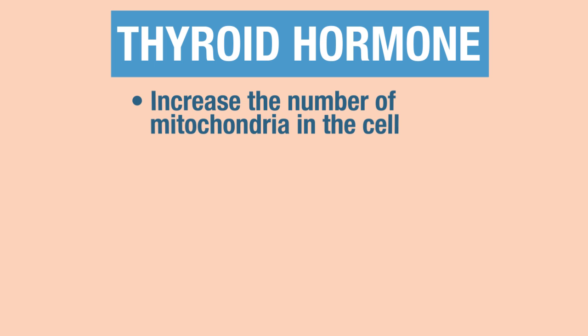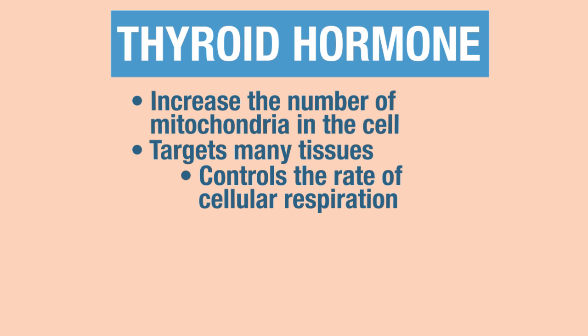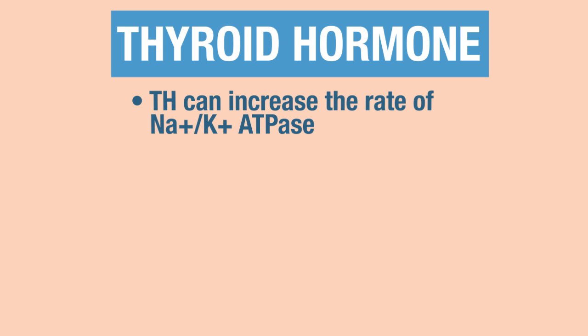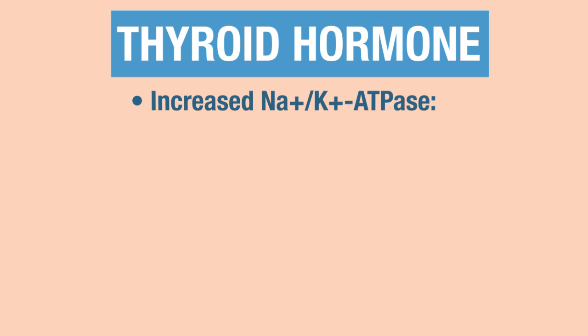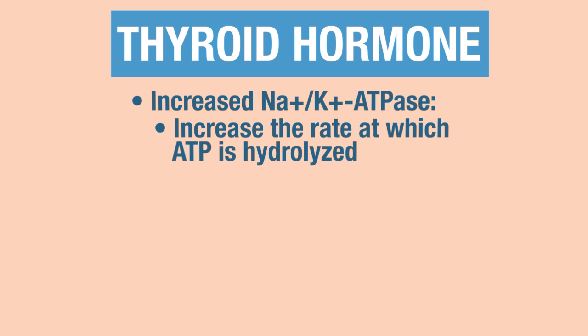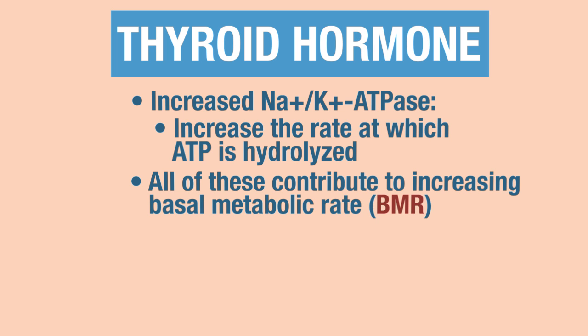Thyroid hormone does a number of things. It can increase the number of mitochondria within cells. It also targets many different tissues, controlling the rate of cellular respiration — in other words, controlling the rate of metabolism. Throughout the body, thyroid hormone can also increase the rate of the sodium-potassium ATPase, which is the sodium-potassium pump. Increasing the rate of that pump means increasing the rate at which we hydrolyze ATP. All of these contribute to increasing your basal metabolic rate.